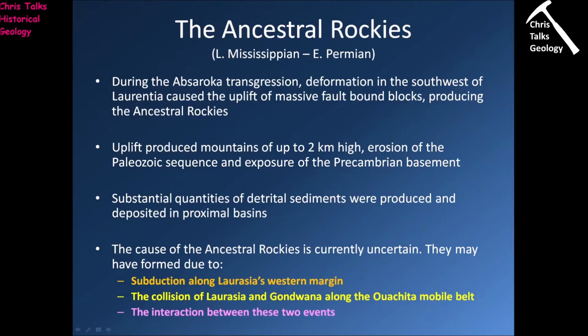The ancestral Rockies formed between the late Mississippian and the early Permian. During the Absaroka transgression, deformation in the southwest of Laurentia caused the uplift of massive fault-bound blocks, producing the ancestral Rockies — essentially plate tectonics pushing huge chunks of rock straight up out of the ground. This uplift produced mountains up to two kilometers in height. Erosion of the Paleozoic sequences exposed the Precambrian rocks underneath, and produced substantial quantities of detrital sediment that was deposited into the Absaroka Epeiric Sea.